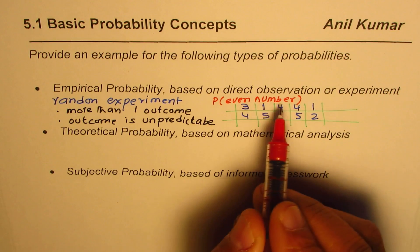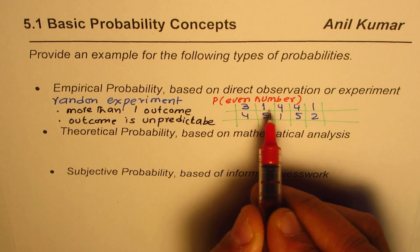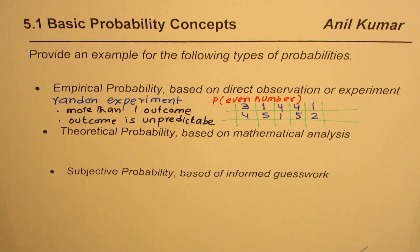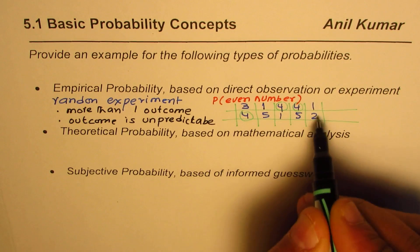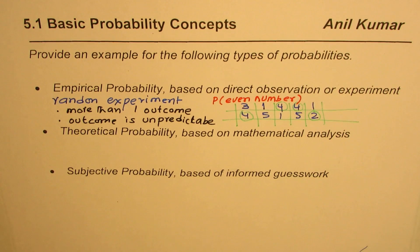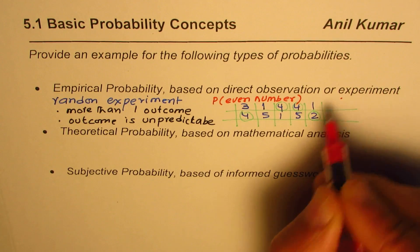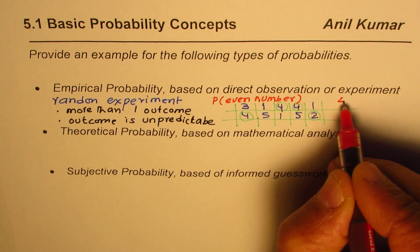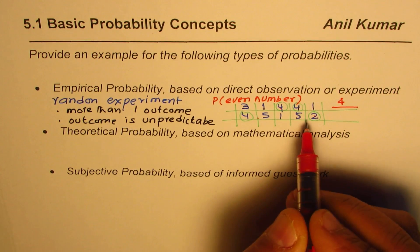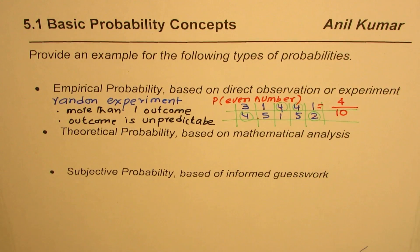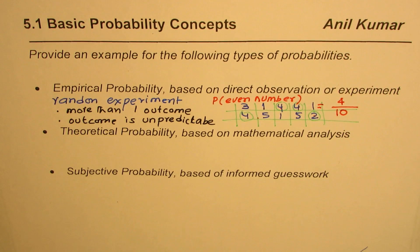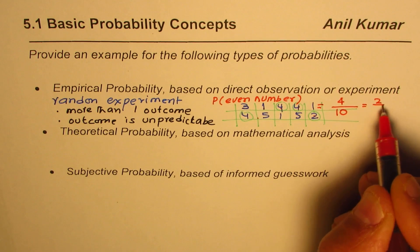So the probability of getting even number is how many times did we really get an even number out of these ten. So the even numbers which we got were one, two, three, and four. So the experimental probability for getting even number is four over the number of times we tried this experiment, and that was ten. So four over ten is the experimental probability of getting even number which is two over five.